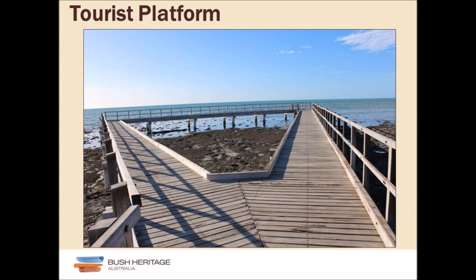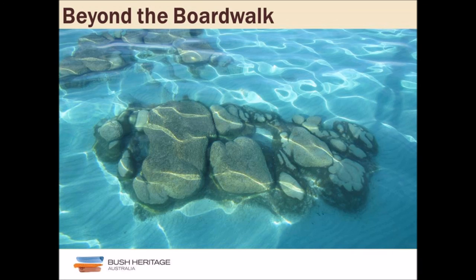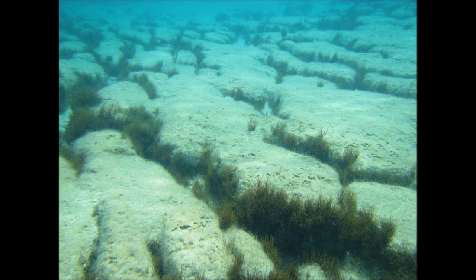An important thing to consider is how these structures change when you get away from the boardwalk. This composite stromatolite is massive — big stromatolites that have grown in a cluster and started to join together, with macroalgae fringing the margins. Further up the east side, there are tabular stromatolites fitting into one another, with grooves caused by currents and elongation perpendicular to shore.